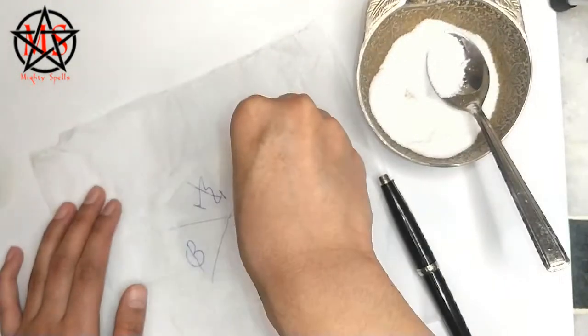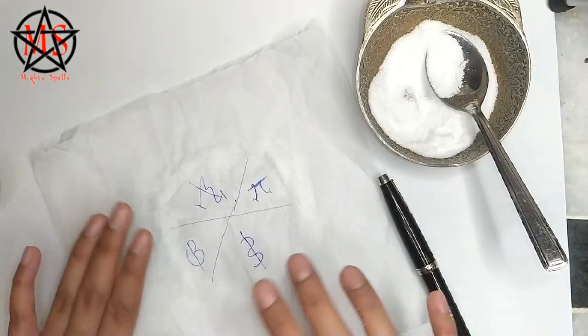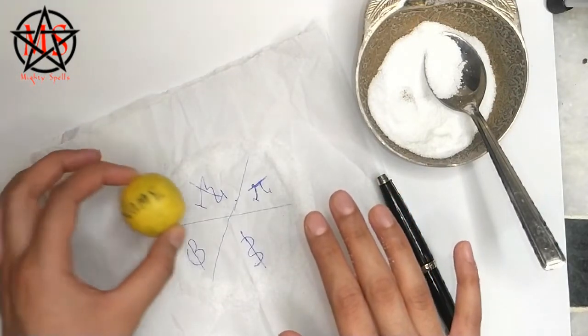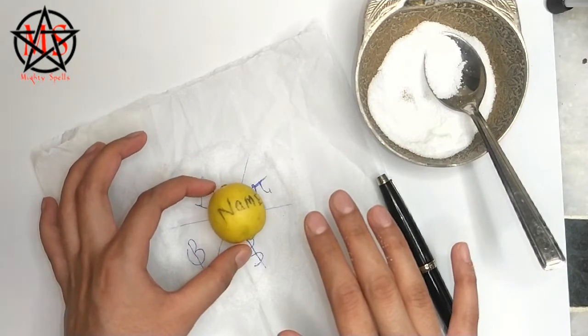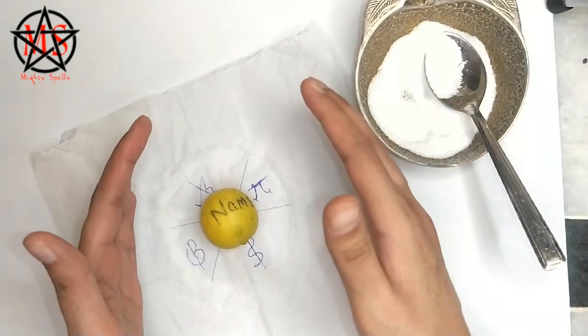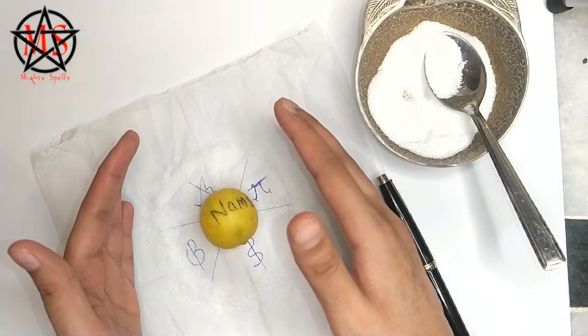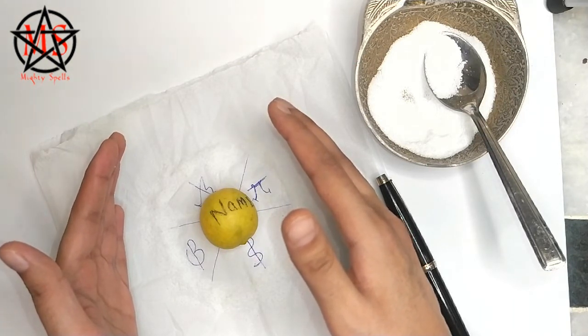Now you have to put the lemon with the name like this and chant: all the positive affirmations, I call upon you to control the mind of this person and make this person only obey me and do what I want him or her to do. And like this, your spell is done.